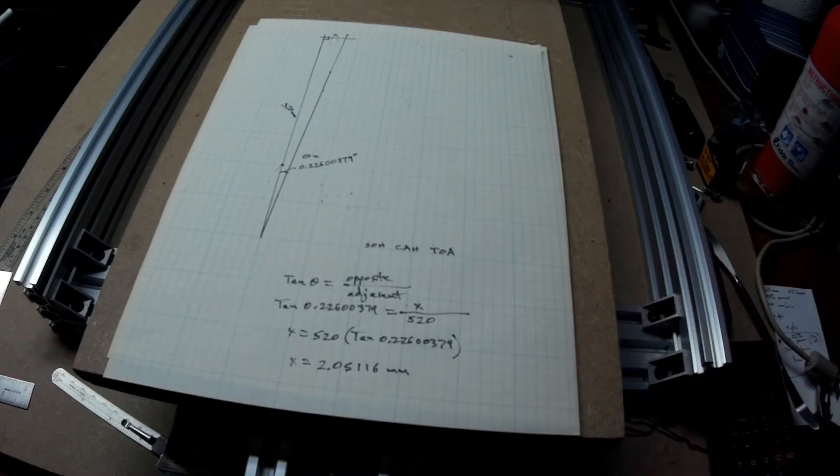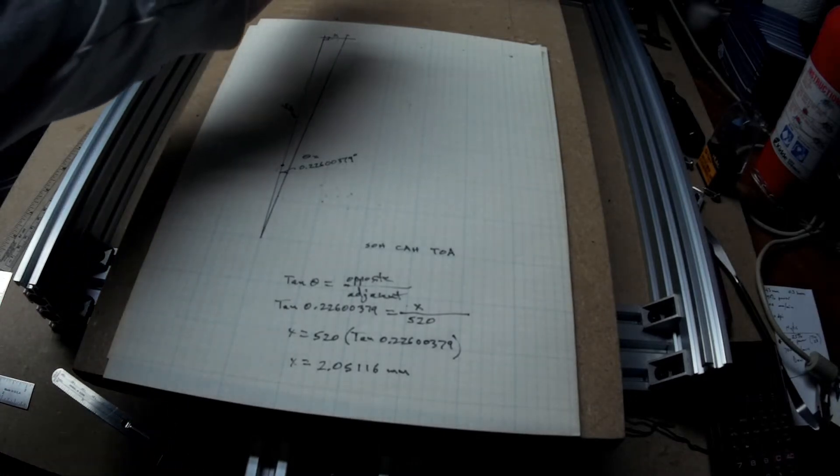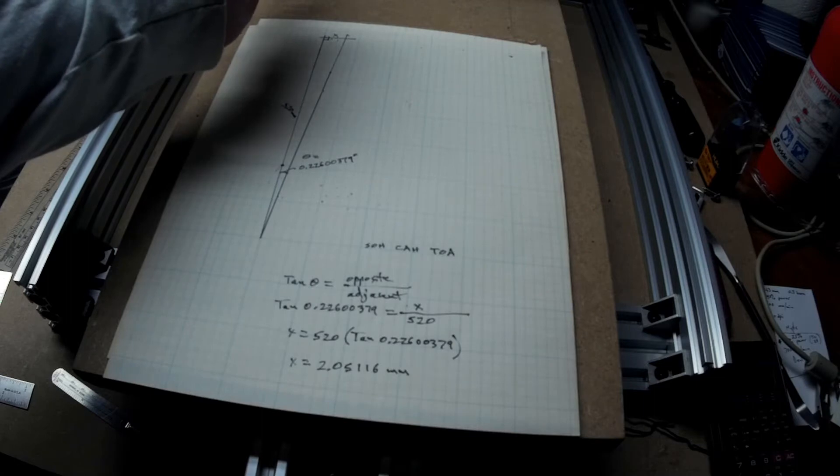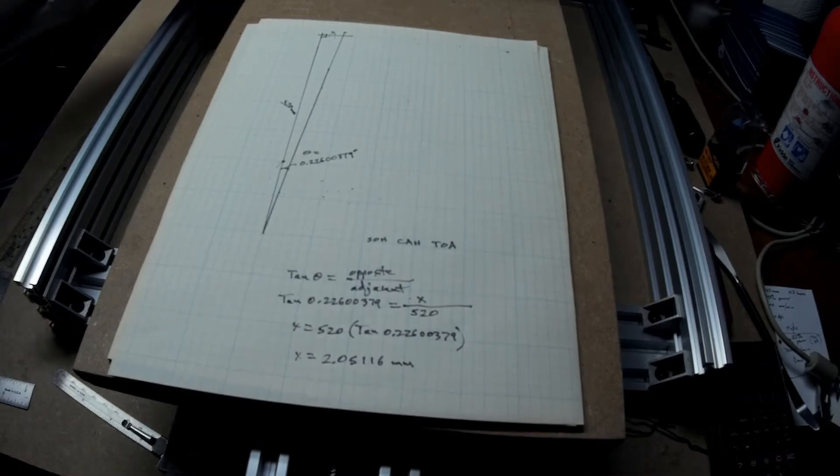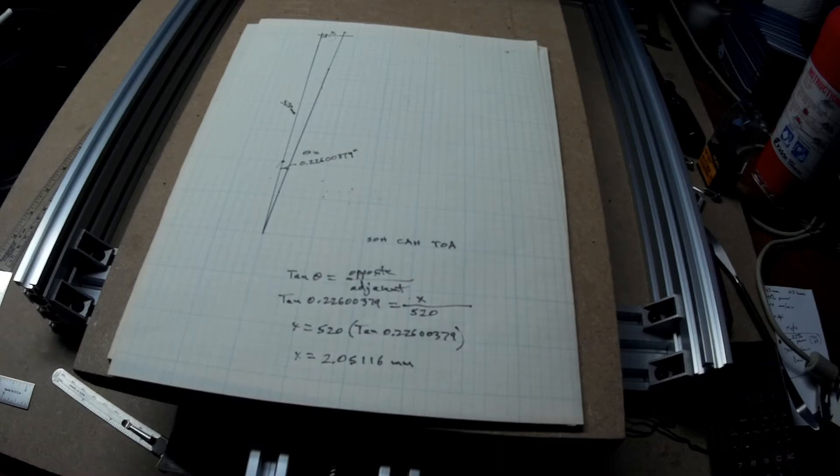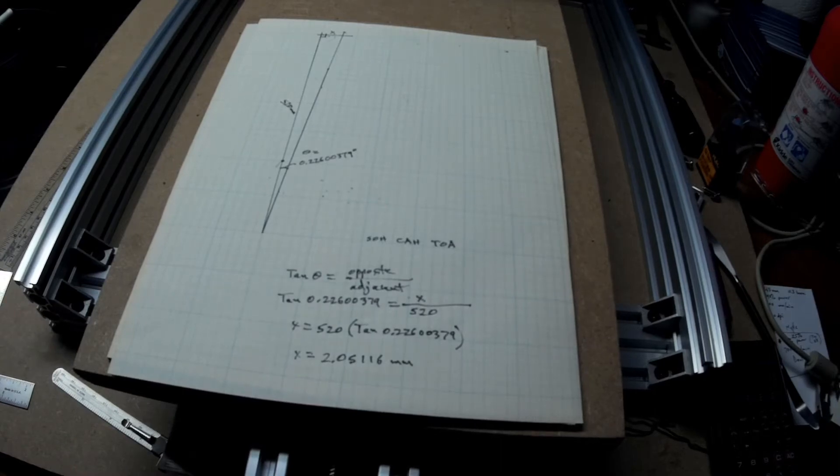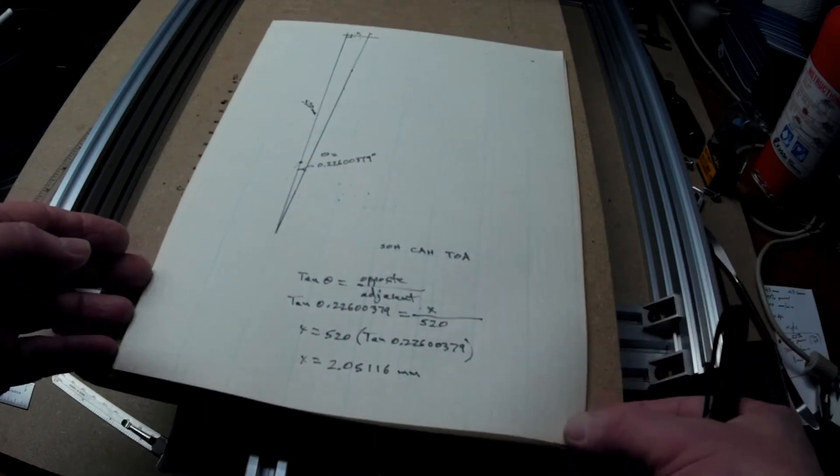And, then I will repeat the process and check for square again. I've got plenty of room to do that. And actually, instead of moving the back over 2 millimeters to the left, I'm going to move the front 2 millimeters to the right, which means I'll pivot on this screw instead of this screw. I'm going to do that, and then I'll come back and I'll show you a test of the results.